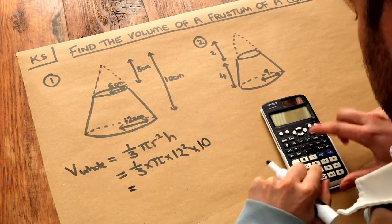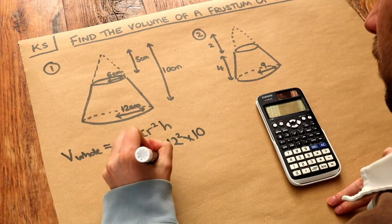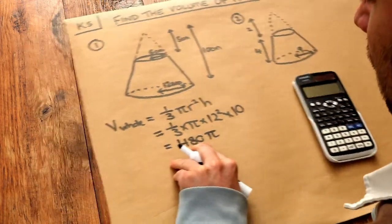And then if we put that in our calculator, it will simplify it for us. So we get 480 pi. We can leave it like that for the moment. We can always put it as a decimal at the end.